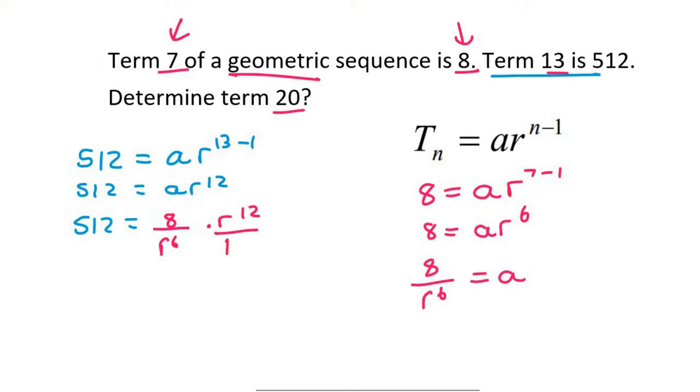We don't really need these brackets. Now what you're doing is you're just multiplying across. So it just becomes 512 equals 8r^12 over r^6. Now, r^12 over r^6 just becomes r^6. So we have 8r^6.